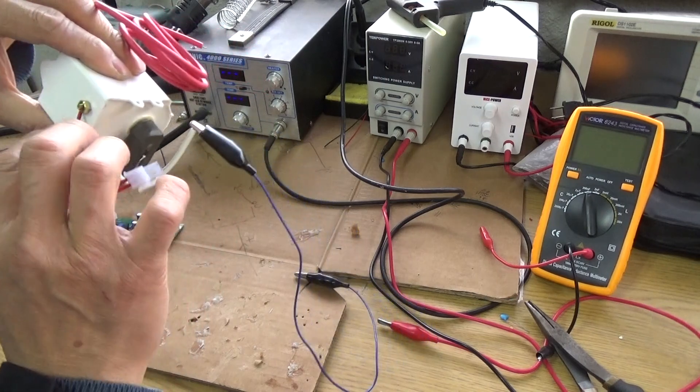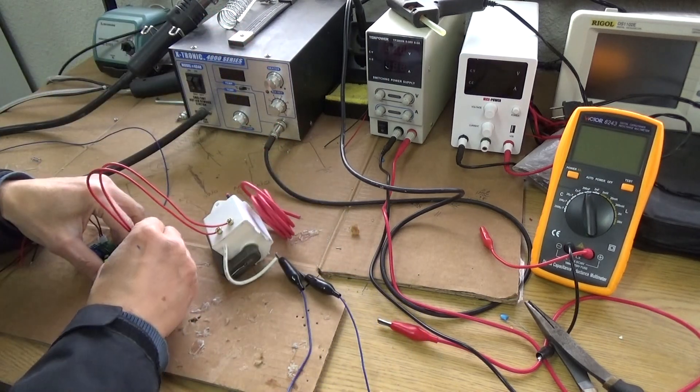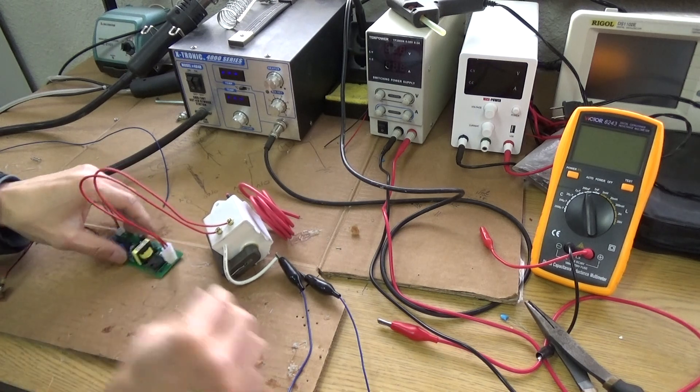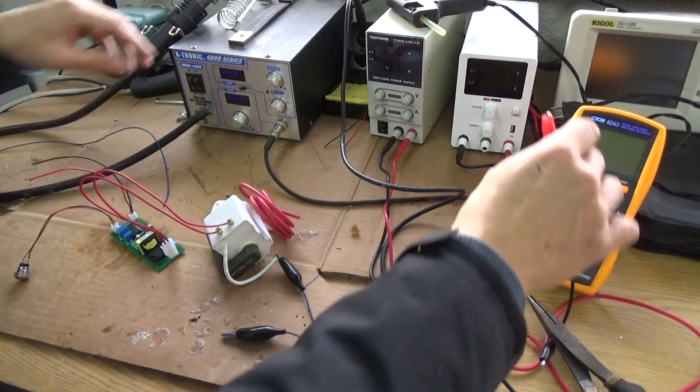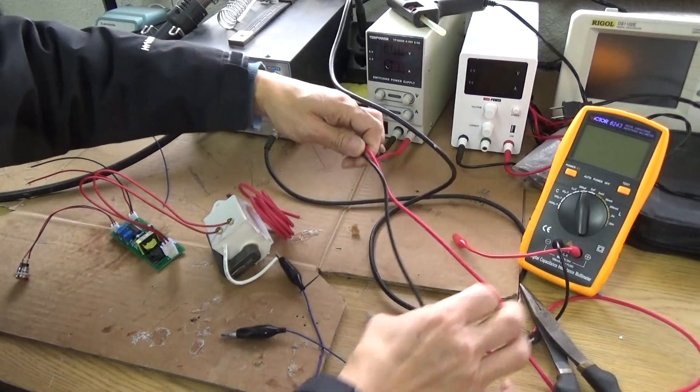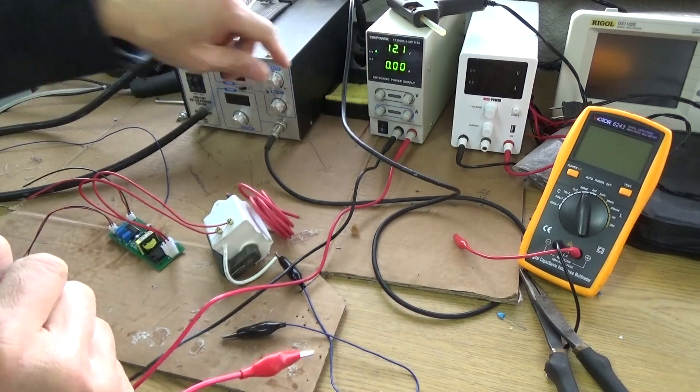There are two poles on the transformer at the bottom, so we plug it into here. And then we get power from my DC power supply, running at 12V.